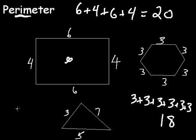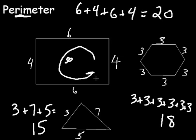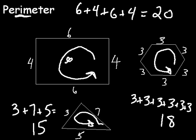Over here we have 3 plus 7 plus 5 equals 15. Don't make perimeter any more complicated than it is — it's simply the distance around, and you calculate that by adding up the sides.